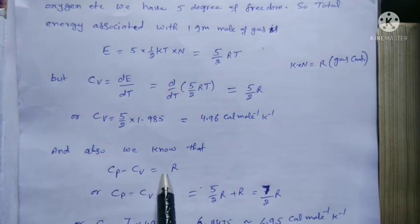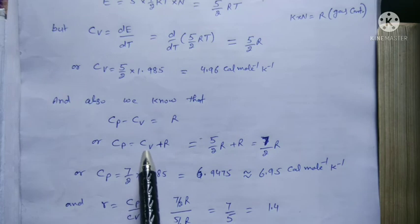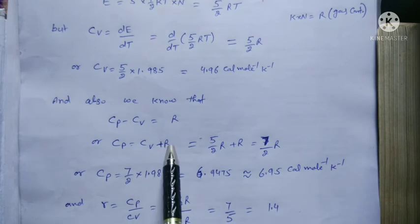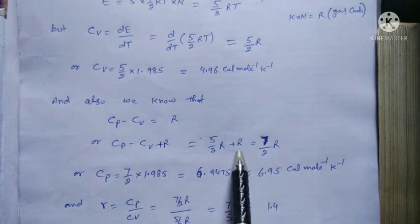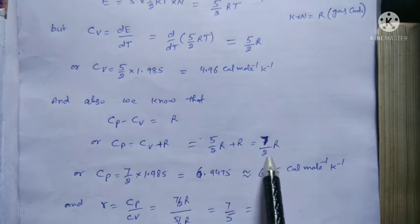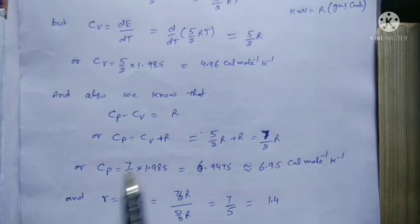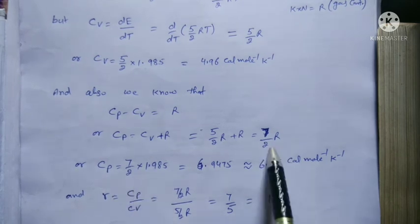Also, we know that Cp - Cv = R, or Cp = Cv + R. So Cp is equal to (5/2)R + R, which gives us (7/2)R.